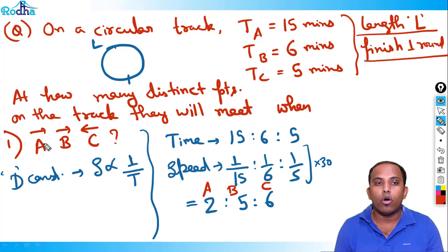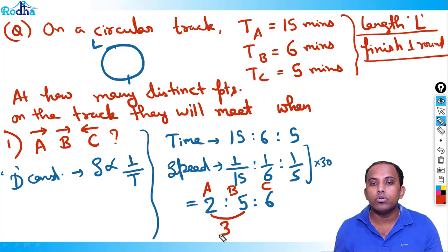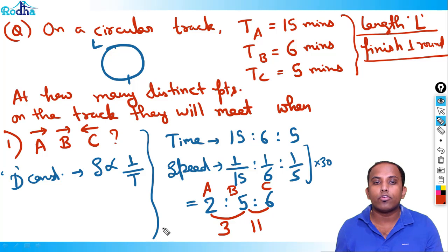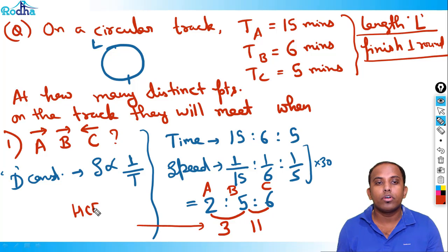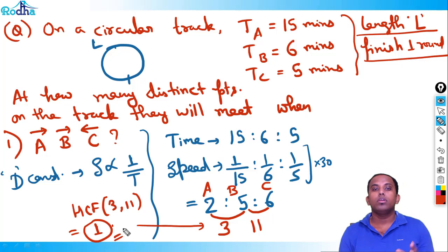Speed ratio of A, B, C is 2:5:6. A and B in same direction: they meet at 5 minus 2 = 3 points. B and C in opposite direction: they meet at 5 + 6 = 11 points. HCF of 3 and 11 is 1. So they meet at only 1 point, which is the starting point.